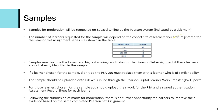Samples for moderation will be requested on Edexcel online by the Pearson system, indicated with a tick mark next to the learner name, and this will occur in advance of the mark submission deadline. The number of learners requested for the sample will depend on the cohort size registered for the Pearson Set Assignments series, as shown in the table. Most centres are likely to have between 10 and 100 learners, therefore a sample size of 10 will be required.